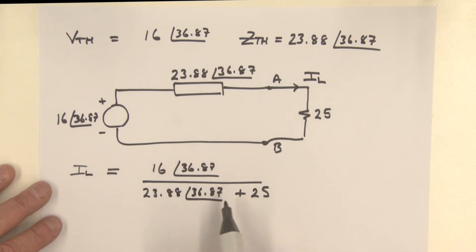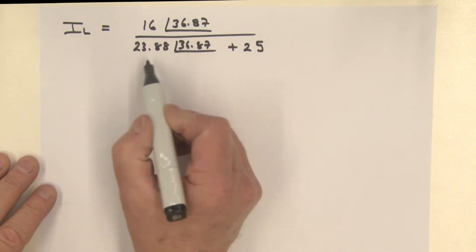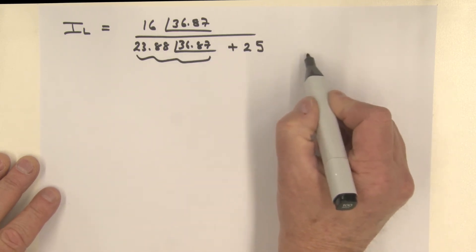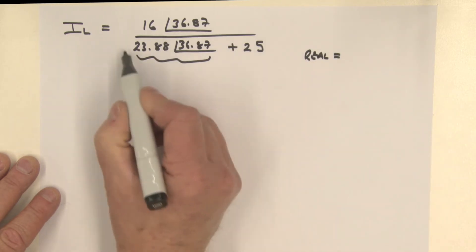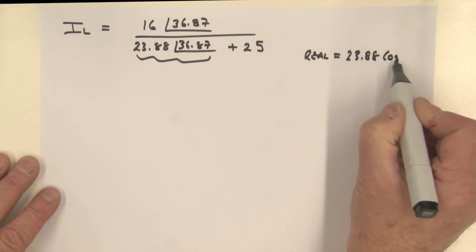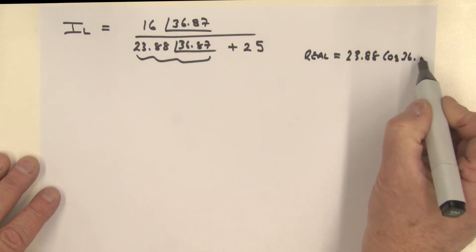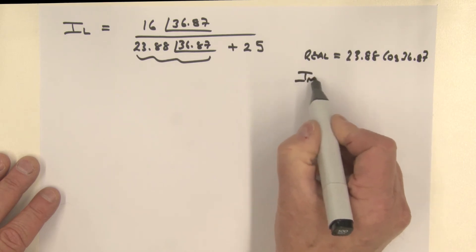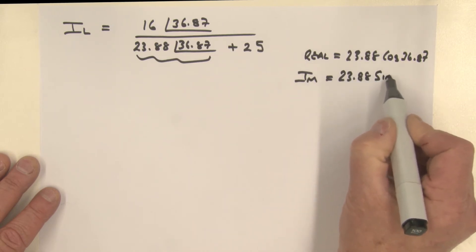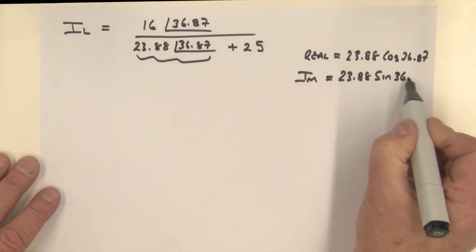In order for us to proceed with this, we need to convert this part here back into a rectangular form, and then we can add the 25 to it and proceed from there. Converting this part into rectangular, remember how we do that? The real component is this magnitude, 23.88 multiplied by the cosine of the angle, 36.87. The imaginary bit is that same magnitude, 23.88 multiplied by the sine of that angle, which is 36.87.